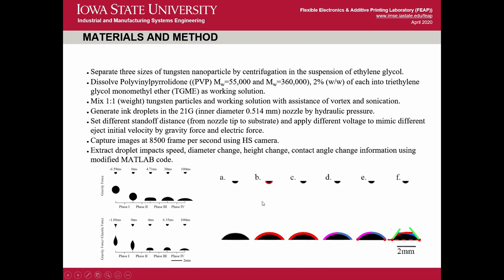For materials, we are using copper nanoparticles, separated into three different sizes by centrifugation. We dissolve polyvinylpyrrolidone, short for PVP, of two kinds of molecular weight into TGME as a working solution, then mix them in a one-to-one ratio to form the final ink solution. Ink droplets are generated using a 21-gauge nozzle by hydraulic pressure.